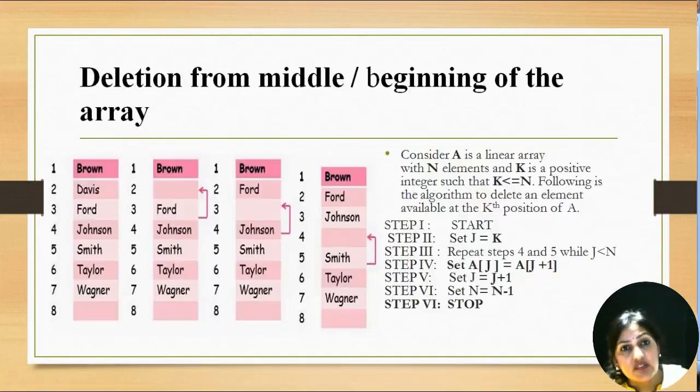But if we want to delete from in between or from the beginning of the array, then after removing, we have to rearrange the elements of the array. For example, we want to delete Davis from index 2.